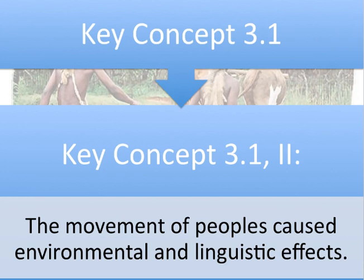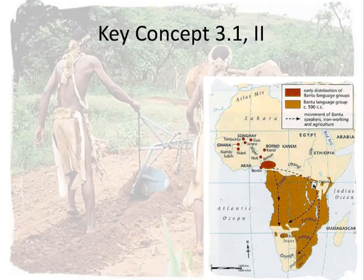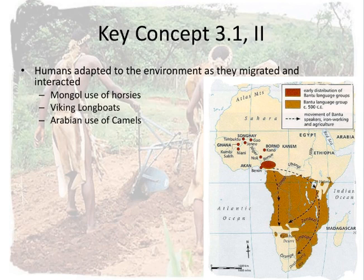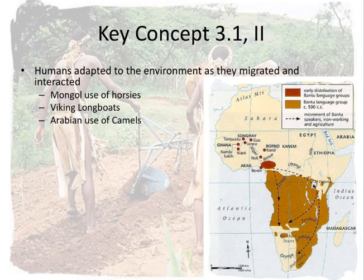Moving on to Key Concept 3.1, Roman numeral 2, which states that the movement of peoples caused environmental and linguistic effects. We're talking about migrations. Humans adapted to the environments as they migrated and interacted. The Mongols used and domesticated the horse in Eurasia. The Vikings adapted to their seafaring ways by building longboats — broad, large boats that navigated wide waters and could take a beating.